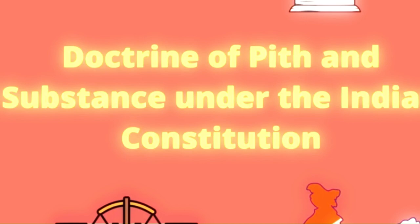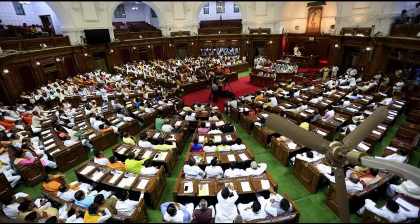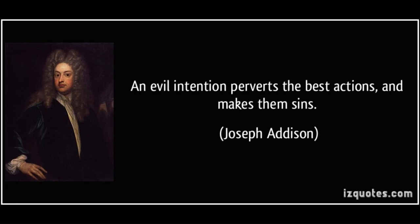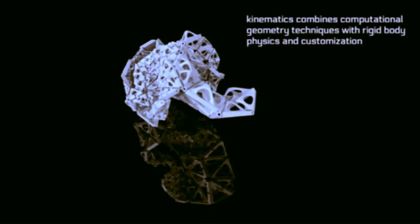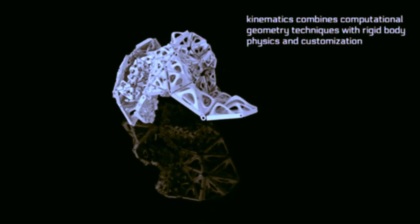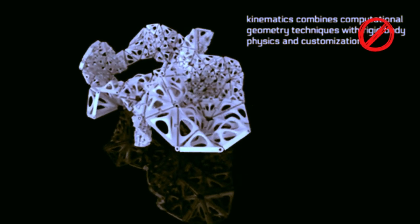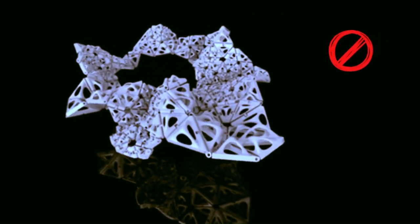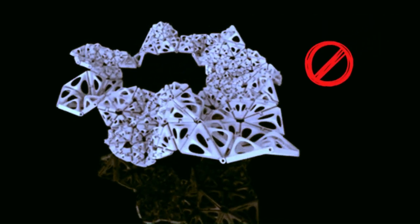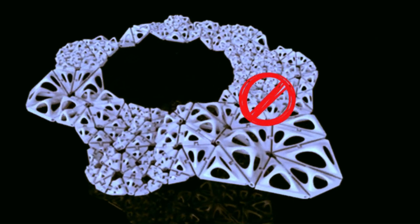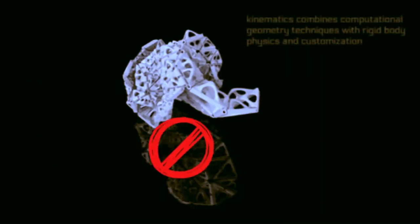Some objectives of this doctrine are: to ensure against the mala fide or fraudulent exercise of legislative power, where the legislature pretends to do one thing but is doing another; to ensure that the division of legislative power under the lists is not too rigid; and to ensure that the power exercised by the legislature for one purpose may incidentally or indirectly touch another purpose.